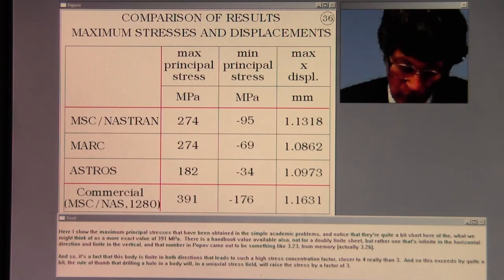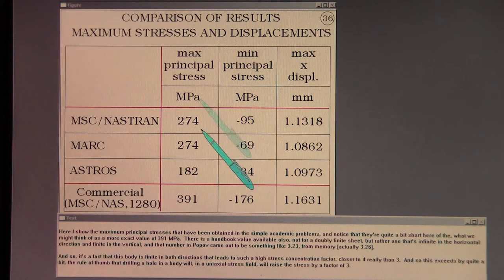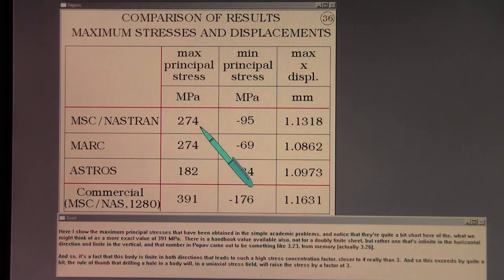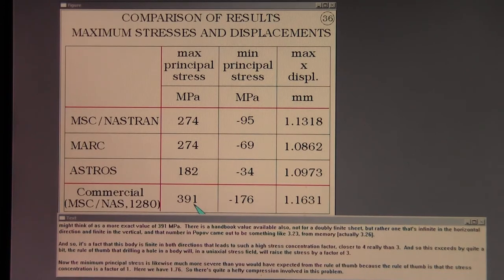Here I show the maximum principal stresses that have been obtained in the simple academic problems. And notice that they're quite a bit short here of what we might think of as a more exact value of 391 megapascals. There is a handbook value available also, not for a doubly finite sheet, but rather one that's infinite in the horizontal direction and finite in the vertical. And that number in Popov came out to be something like 3.23 from memory.